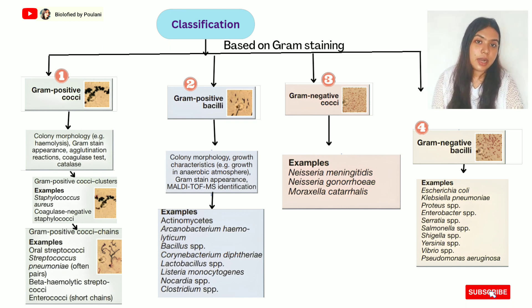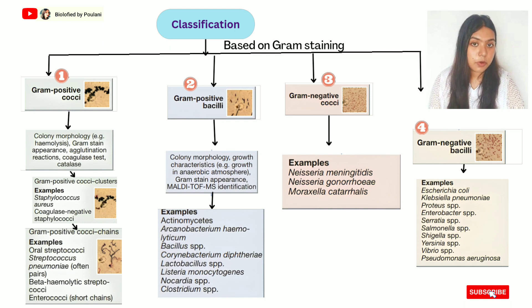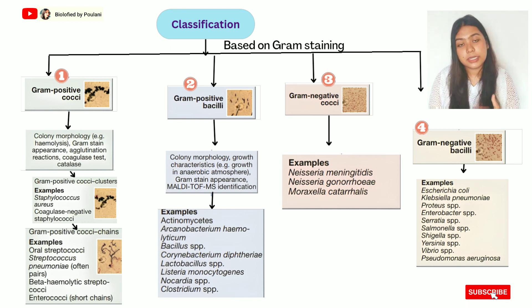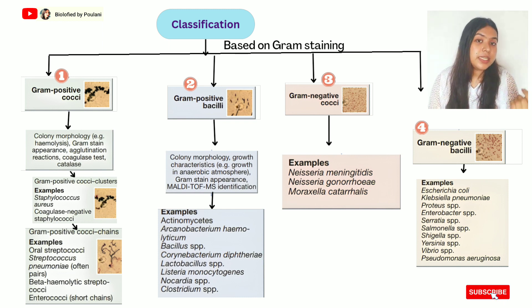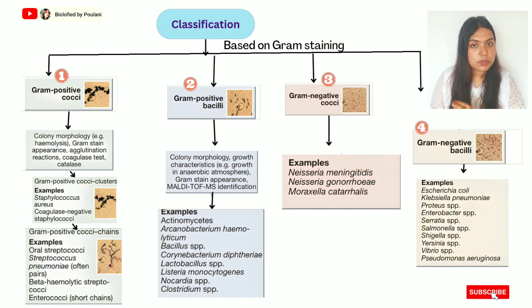In gram staining, a special procedure is followed using iodine as a mordant and crystal violet stain. Bacteria that take up crystal violet and appear blue are considered gram-positive. Those that take up safranine stain are considered gram-negative bacteria. That covers the classification of gram-positive and gram-negative bacteria.